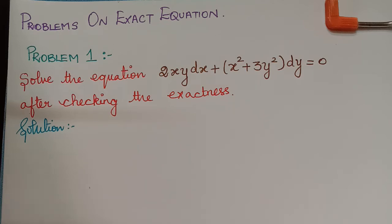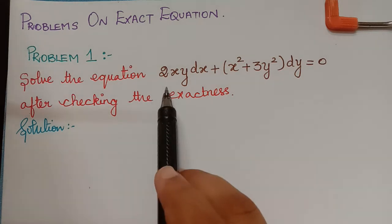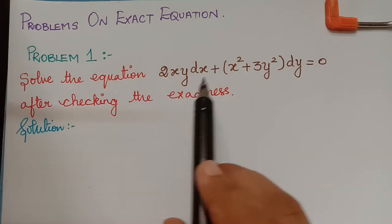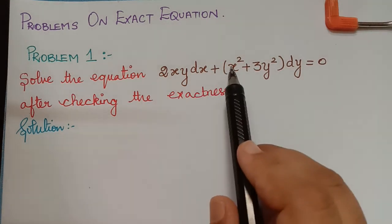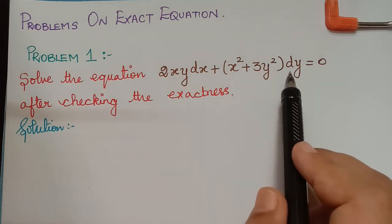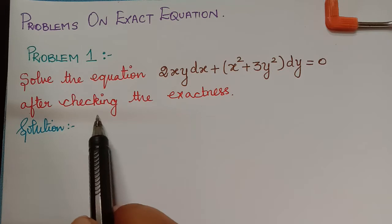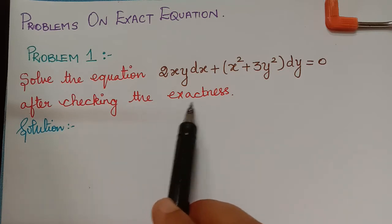Hello students. Under the topic ordinary differential equations, we are going to solve problems on exact equations. Solve the equation 2xy dx plus (x squared plus 3y squared) dy equals 0, after checking the exactness.